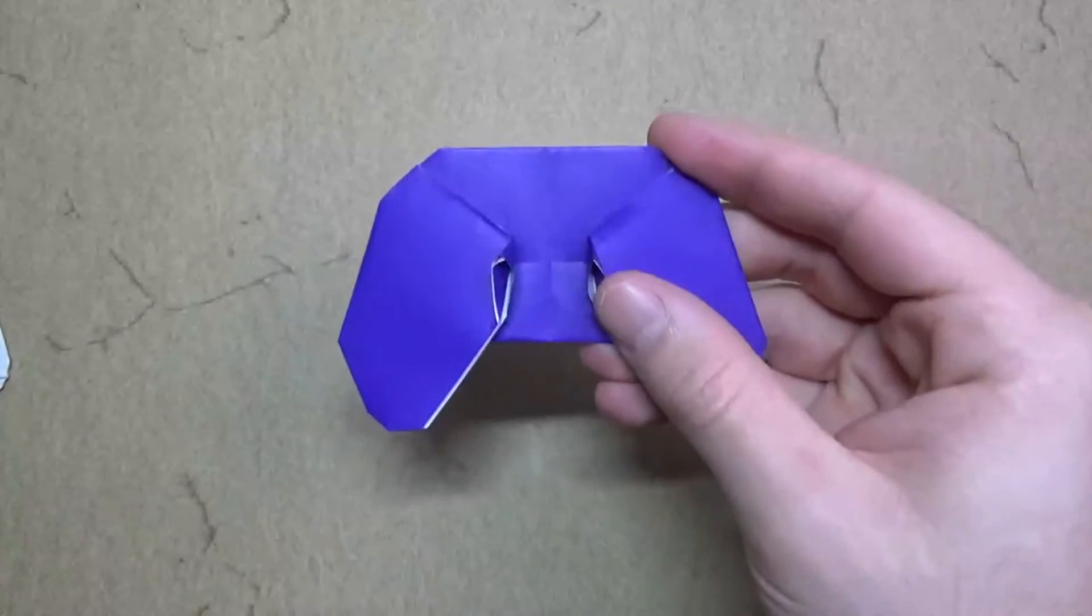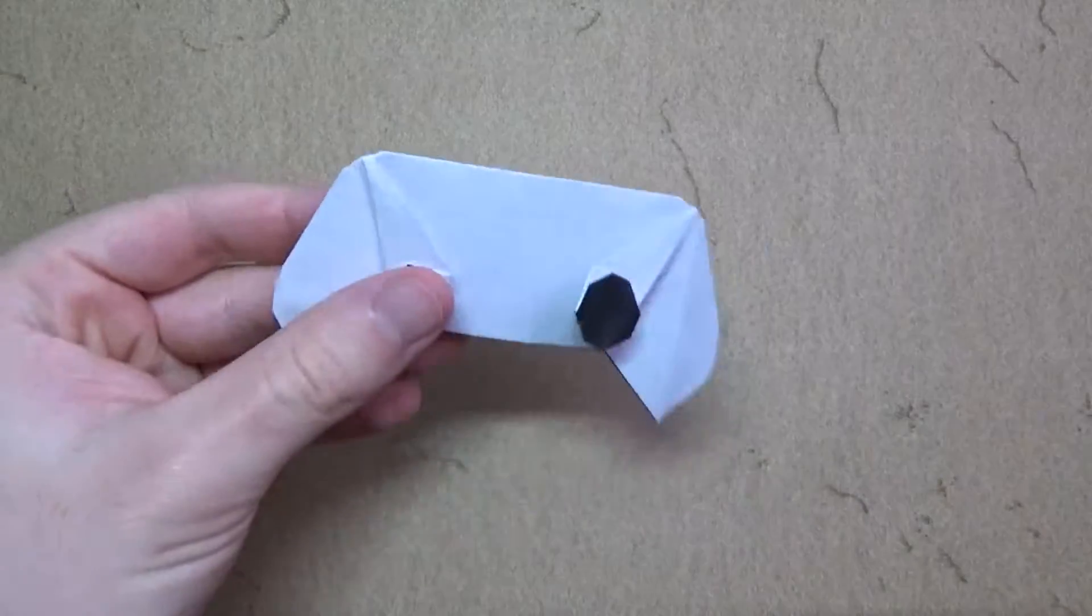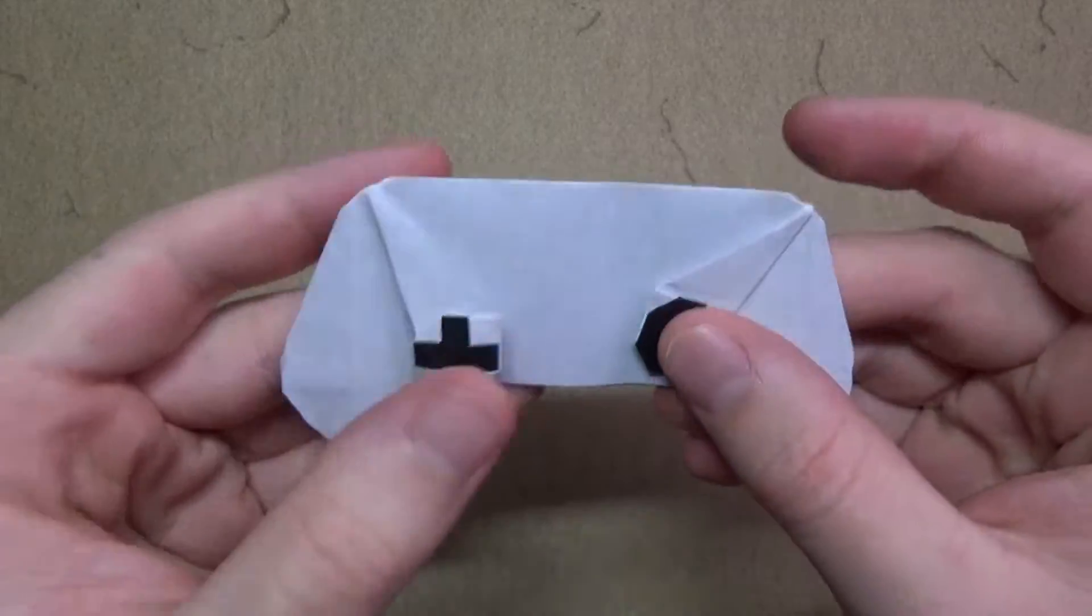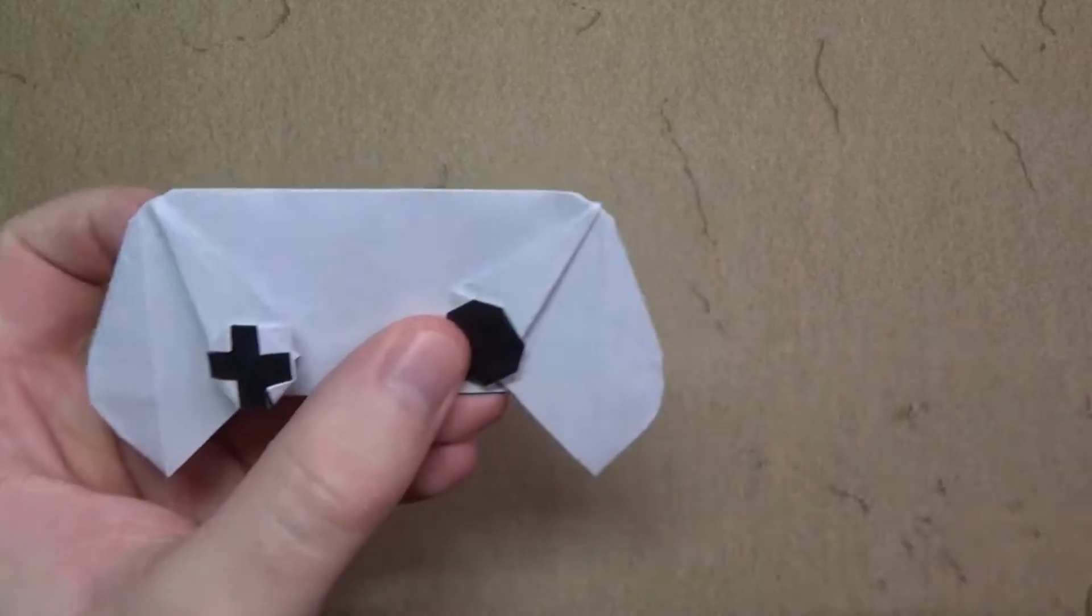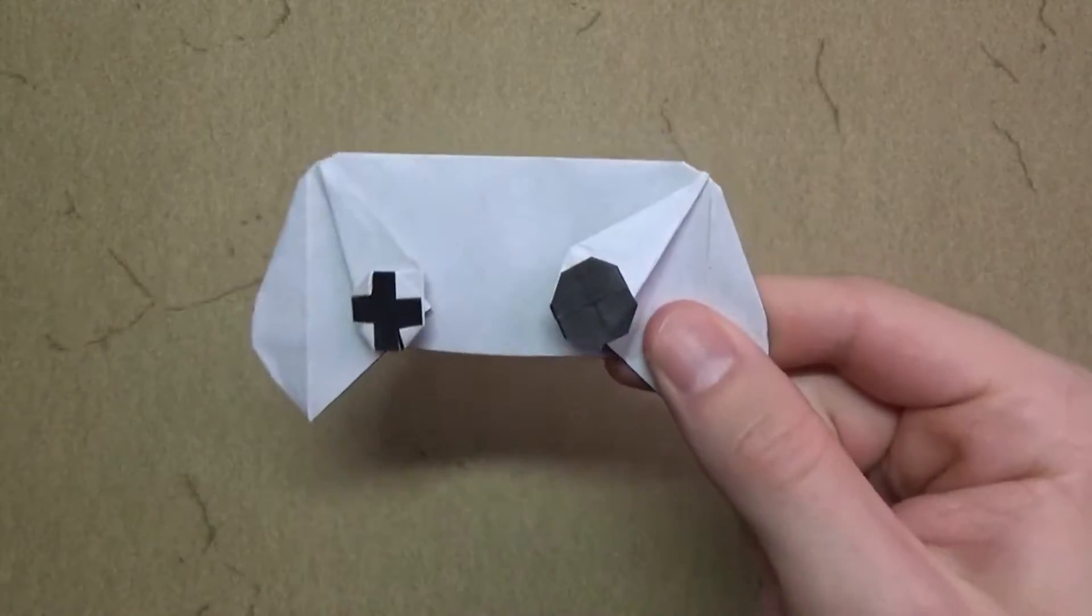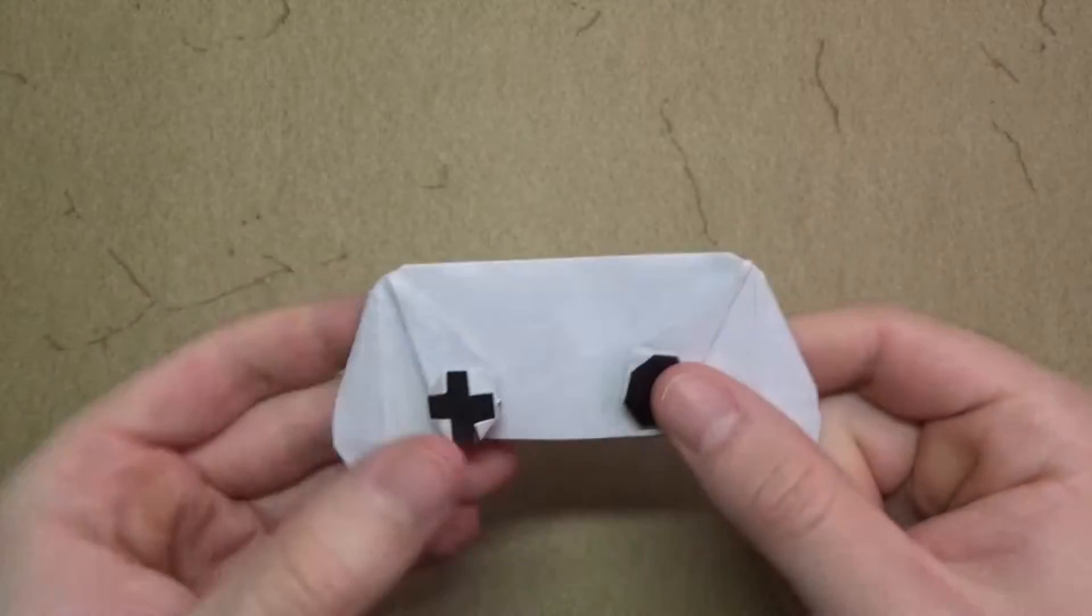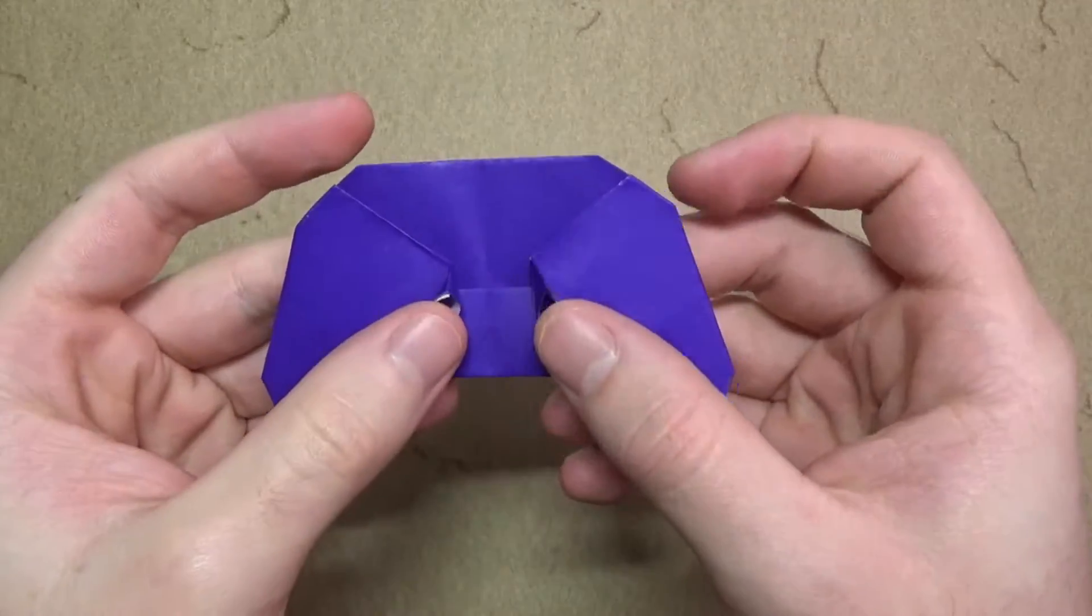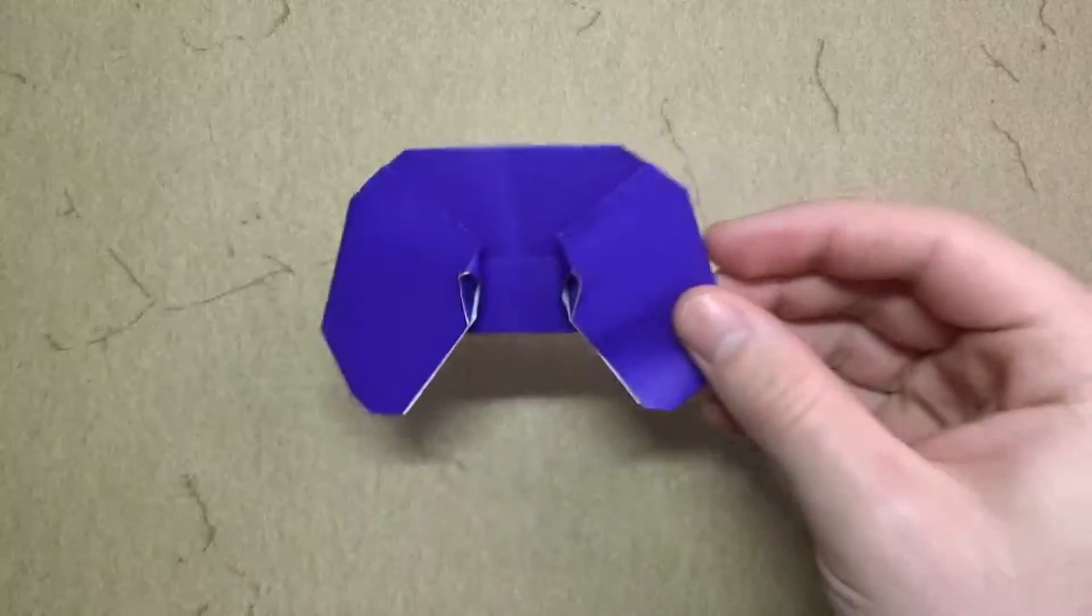And I want to mention that this model is actually based on this origami Xbox game controller with the movable joysticks. This is designed by Jeremy Schaefer, and he made a tutorial for this model. So I'm not going to teach this, but he made a tutorial for that. So this is by Jeremy Schaefer, and this is my version right here. Check it out. Isn't that cool? And I'm going to show you how to fold it.